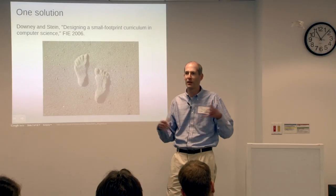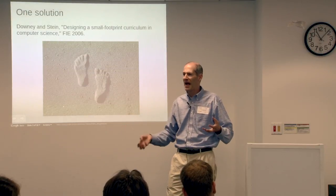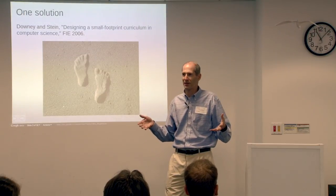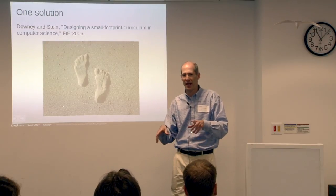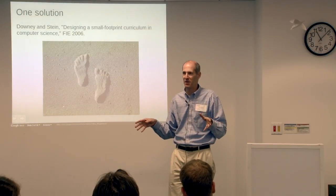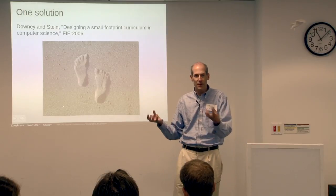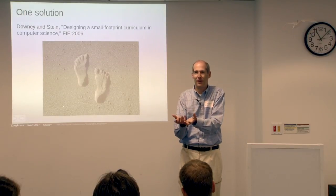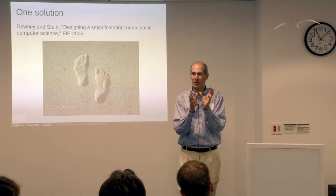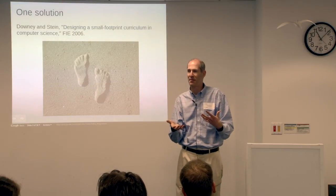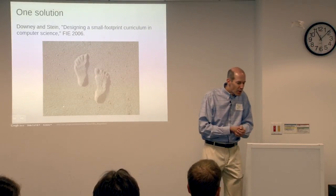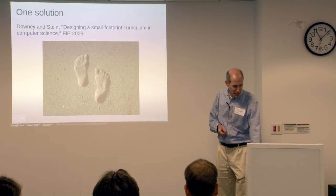We took all the ideas in computer science — the whole curriculum — and you can imagine if each class is a box full of stuff, we just took all the stuff, dumped it on the table, threw away the boxes, and started rearranging it. Because a lot of the groupings of ideas are historical and might not be the best choices for a current curriculum. For example, if you take operating systems and networks together, you're naturally talking about distributed systems; if you take file systems and databases together, you're naturally looking at a file system as a kind of database. We called it the Small Footprint Curriculum in Computer Science.